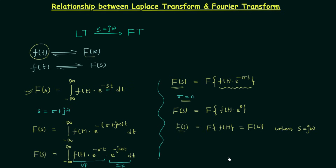Now we will understand why this result is only valid when the given time domain signal is absolutely integrable. We are calculating the Fourier transform of f(t), and the Fourier transform does not exist for signals which are not absolutely integrable. So for the right-hand side to be valid, f(t) must be absolutely integrable. When f(t) is absolutely integrable, we can calculate its Fourier transform, which equals the Laplace transform when s = jω.